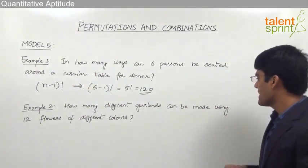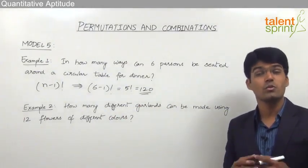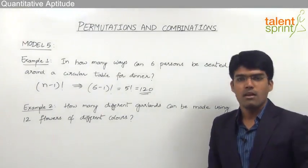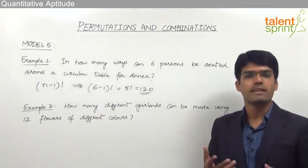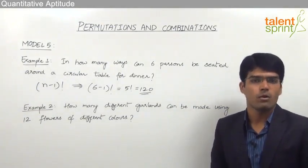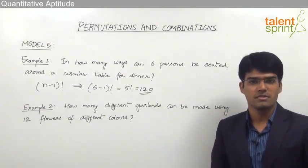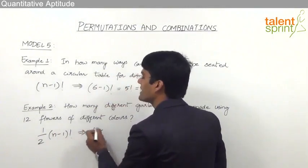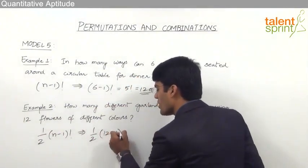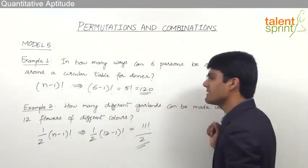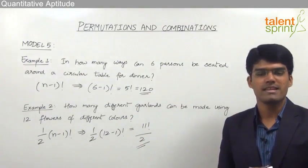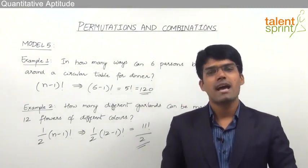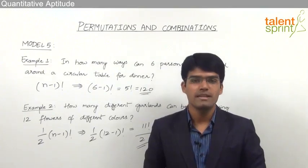The second example: how many different garlands can be made using 12 flowers of different colors? Since we are making a garland, the clockwise arrangement is considered the same as the anti-clockwise arrangement, so the answer is half of (n-1) factorial. With n = 12, the answer is 11 factorial divided by 2. In summary: use (n-1) factorial when clockwise and anti-clockwise are different, and half of (n-1) factorial when they are considered the same.